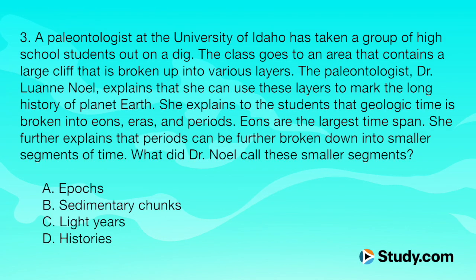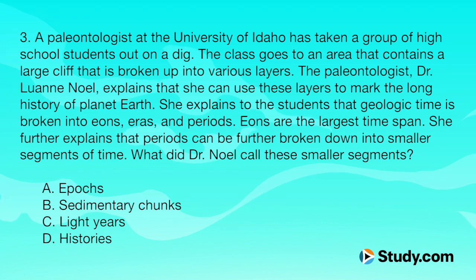Question 3. A paleontologist at the University of Idaho has taken a group of high school students out on a dig. The class goes to an area with a large cliff broken up into various layers. Dr. Luanne Noel explains that she can use these layers to mark the long history of planet Earth — that geologic time is broken into eons, eras, and periods, with eons being the largest time span. Periods can be further broken down into smaller segments. What did Dr. Noel call these smaller segments? A, epochs. B, sedimentary chunks. C, light years. Or D, histories. The correct answer is A, epochs.